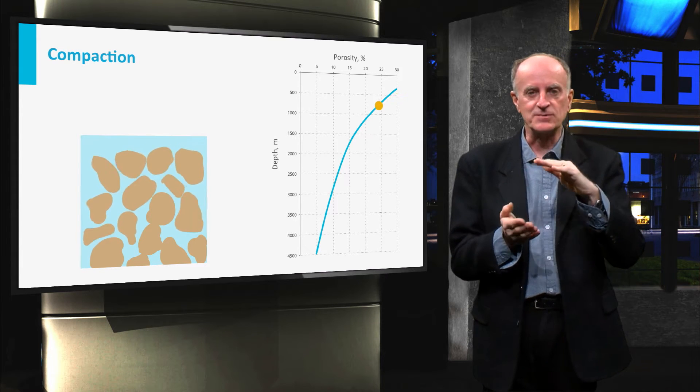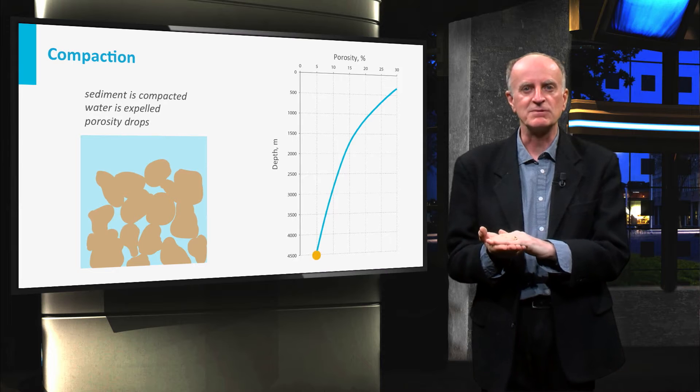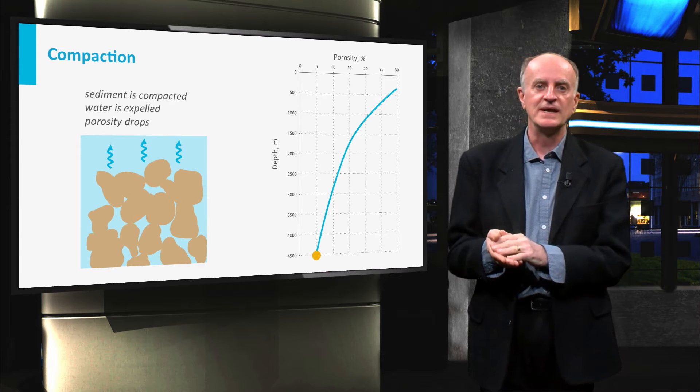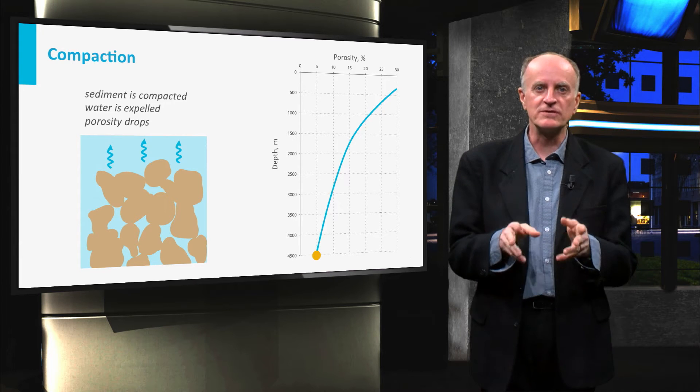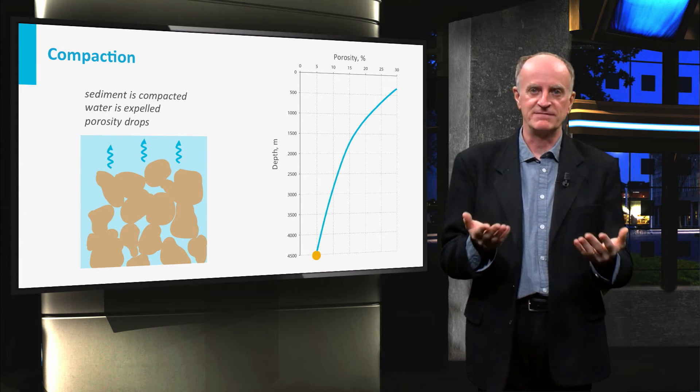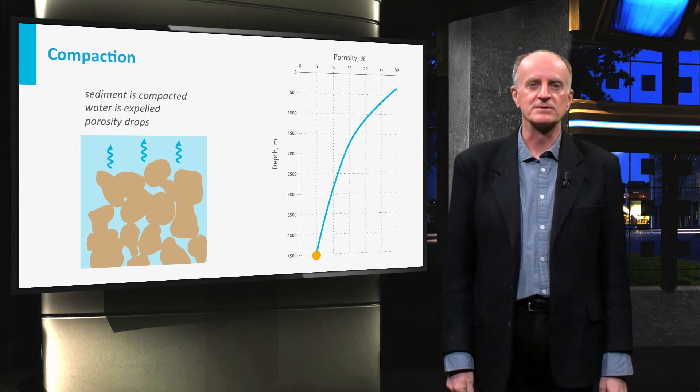With subsidence and increasing overburden, the grains will be packed in a more efficient way and will be slightly deformed. This causes expulsion of water, compaction of the sediment and, as a final result, much lower porosity.